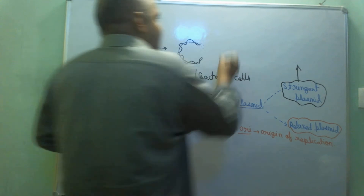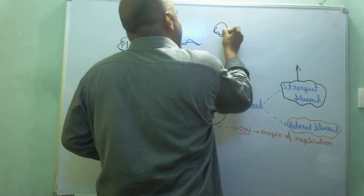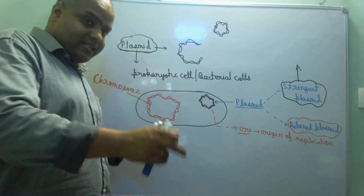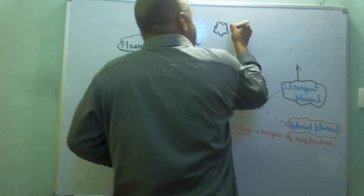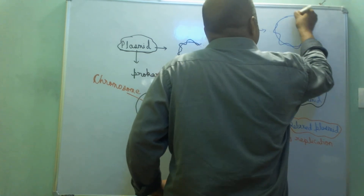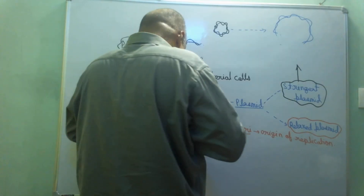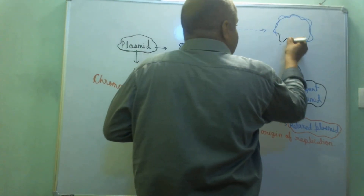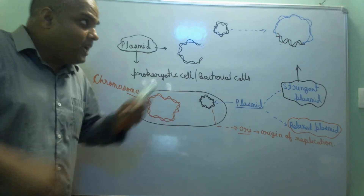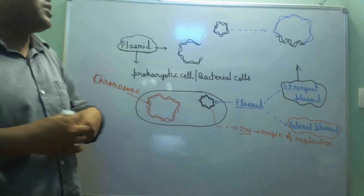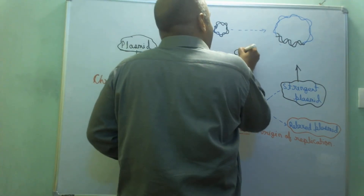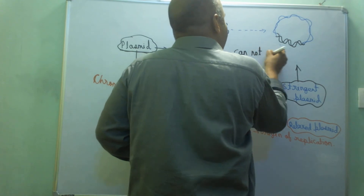For example, we have a stringent plasmid. During bacterial cell division, it has to replicate. So what the stringent plasmid will do? It will come and integrate into the main chromosome of the bacteria — as you can see here, it's integrated. When the main bacterial DNA replicates, our stringent plasmid will also replicate along with it. So it should be very clear: our stringent plasmid cannot replicate independently.